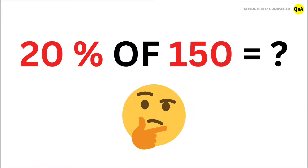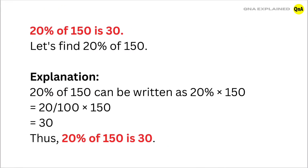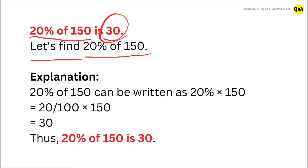20% of 150 is equal to 30. Let's find 20% of 150. The explanation is: 20% of 150 can be written as 20% multiplied by 150.